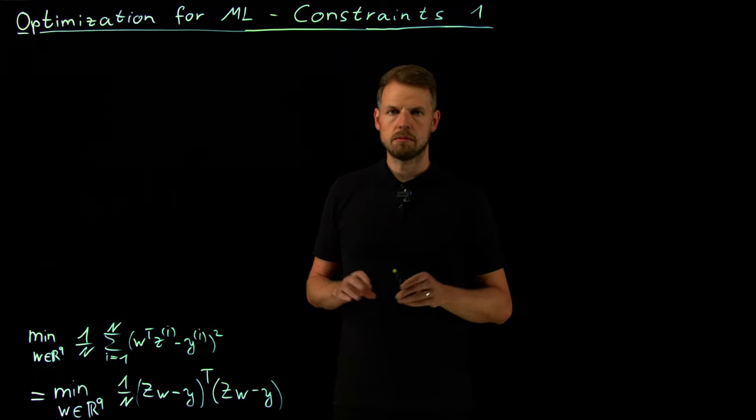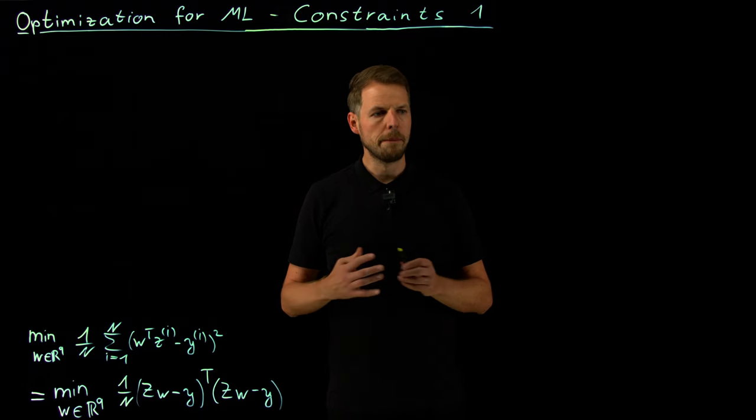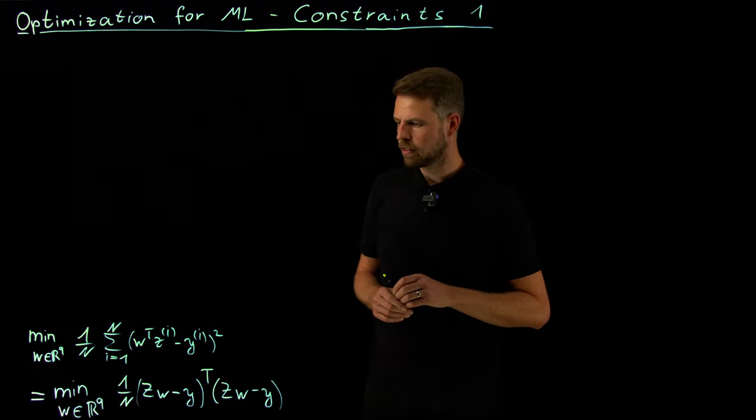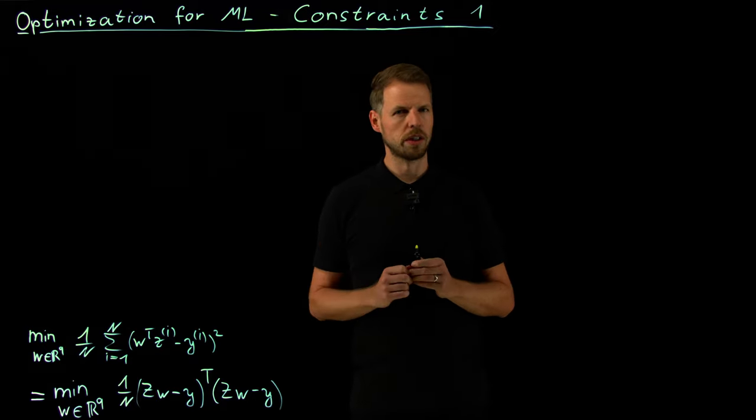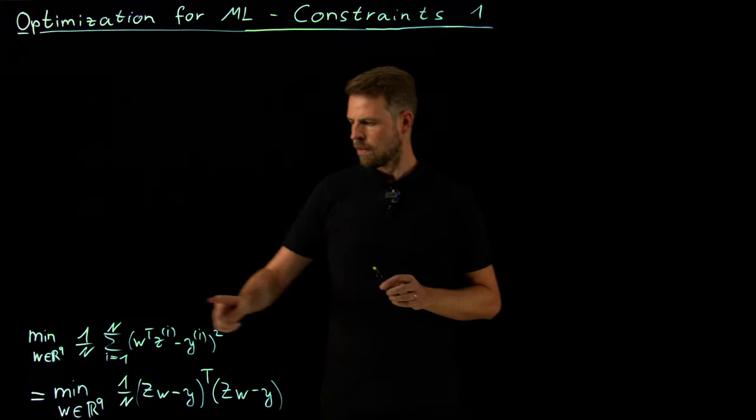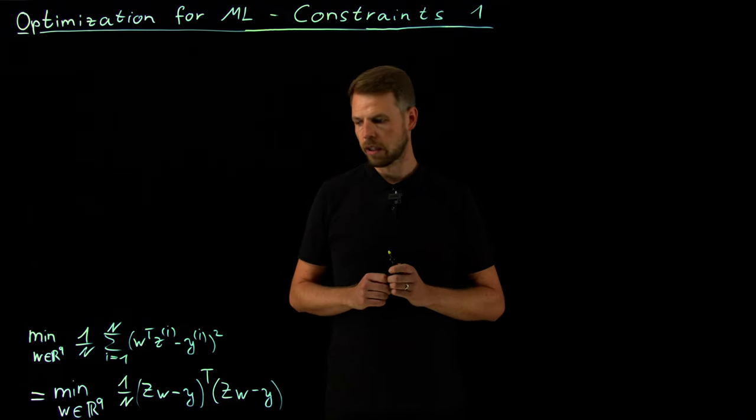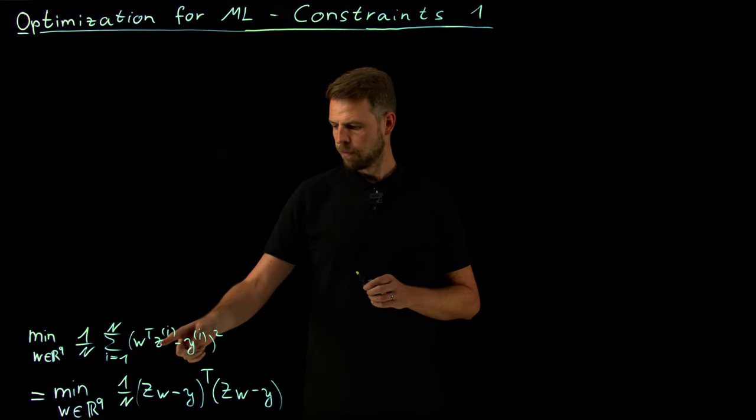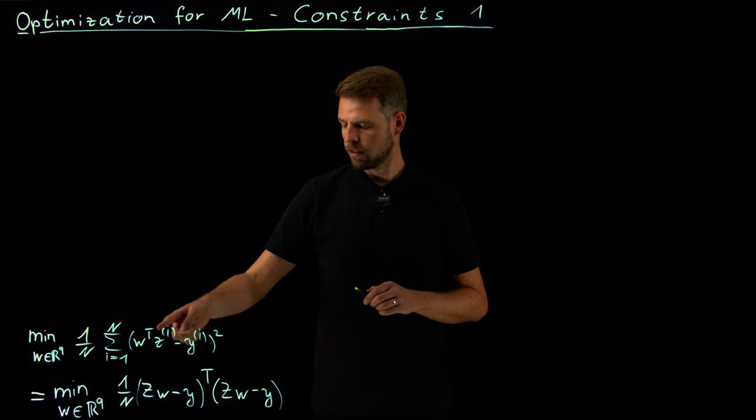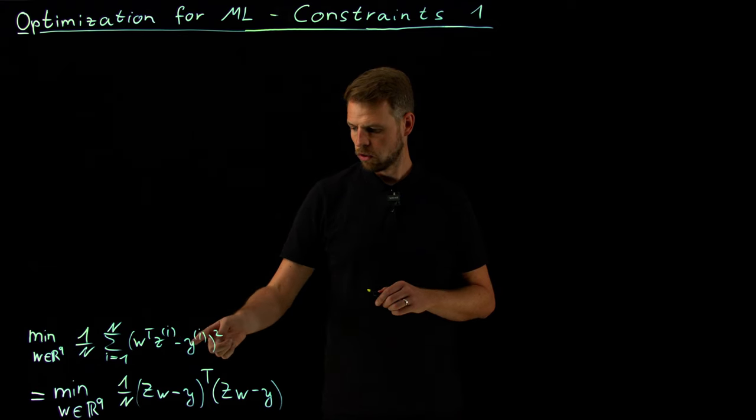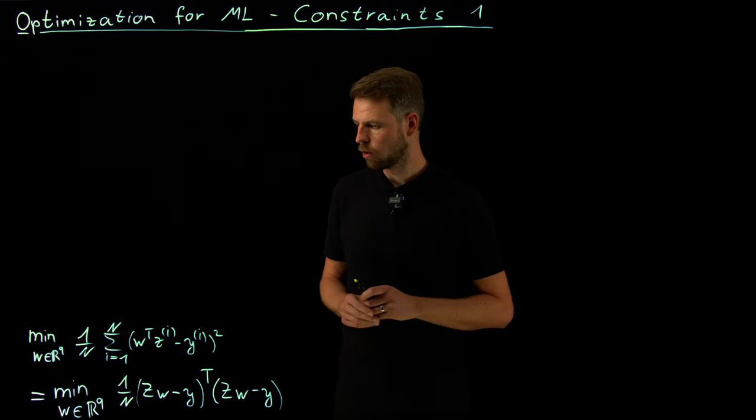Before we start with an introduction and then also a more formal definition of what optimality means under constraints, let's look at a simple example that we have already seen. The outcome when we introduce constraints will also be already known, which will be ridge regression. I am back in this world where we were talking about linear models. Given some input Z and some output Y, or capital N of them, I would like to find the weights so that Z is mapped linearly to Y as closely as possible in our training data set.